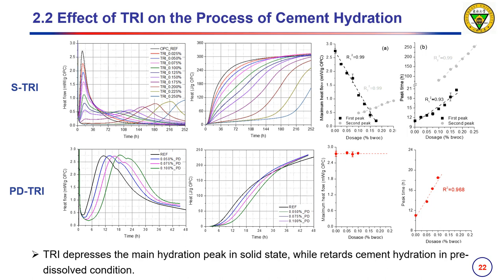Due to the depression of the main hydration peak, the cumulative heat is significantly decreased by up to 19% at one day. Interestingly, after the main hydration peak, another broad peak appeared and brought the cumulative heat back to normal levels after a few days. However, when TRI is pre-dissolved, the shape of the hydration curve is not significantly changed. Therefore, an interaction between the dissolution of TRI and cement hydration can be expected.